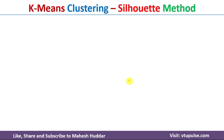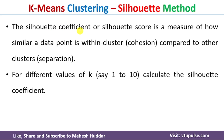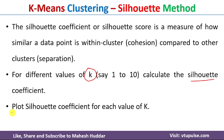Now, moving to the second method — the Silhouette method. First, we will understand what the Silhouette coefficient or Silhouette score is. The Silhouette coefficient is a measure of how similar a data point is within its own cluster compared to other clusters. For different possible values of k — 1, 2, 3, and so on — we calculate the Silhouette coefficient, then plot it against possible values of k and select the best value of k.